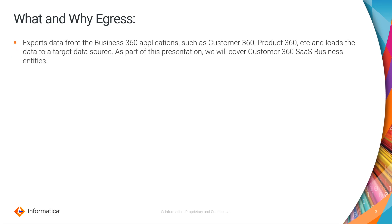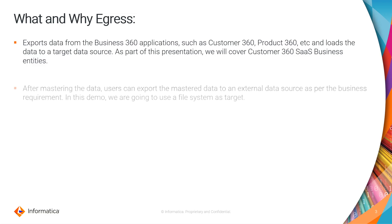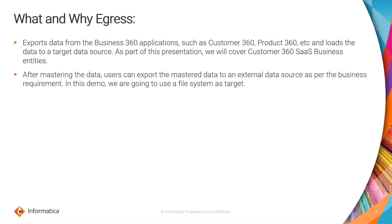So what and why an egress? An egress is basically an export of your data from applications like C360, Product 360, or MBN 360, and loads that exported data into a target data source of your choice. In this demo I will be showing only the Customer 360 using Customer 360 business entities. After mastering your data, users can export this master data to any external data source as per your business requirement. For this demo I'm going to use CSV or flat file as the target source.